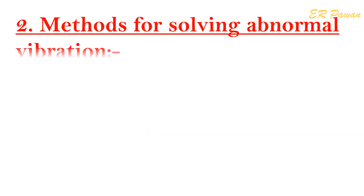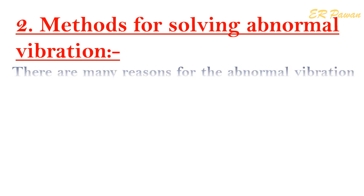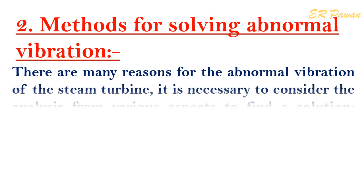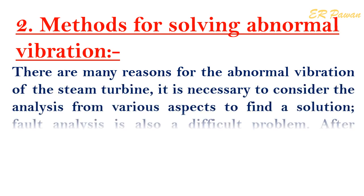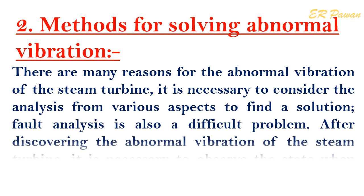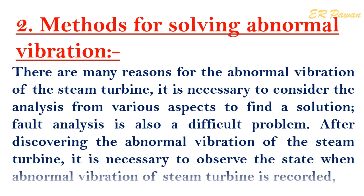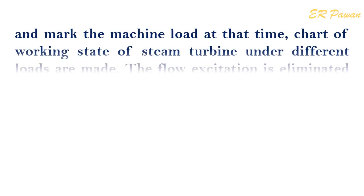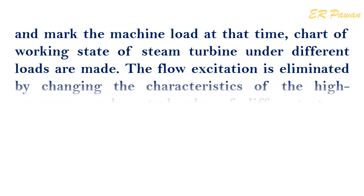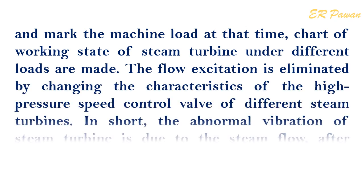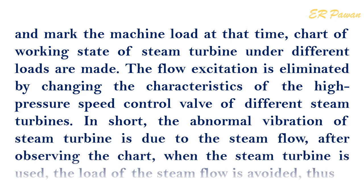Methods for solving abnormal vibration: There are many reasons for abnormal vibration of the steam turbine, and it is necessary to consider analysis from various aspects to find a solution. After discovering abnormal vibration, it is necessary to observe and record the state when it occurs, mark the machine load at that time, and make charts of the working state under different loads. The flow excitation is eliminated by changing the characteristics of the high-pressure speed control valve. When the steam turbine is used, the load of the steam flow is avoided, thus eliminating the flow excitation.